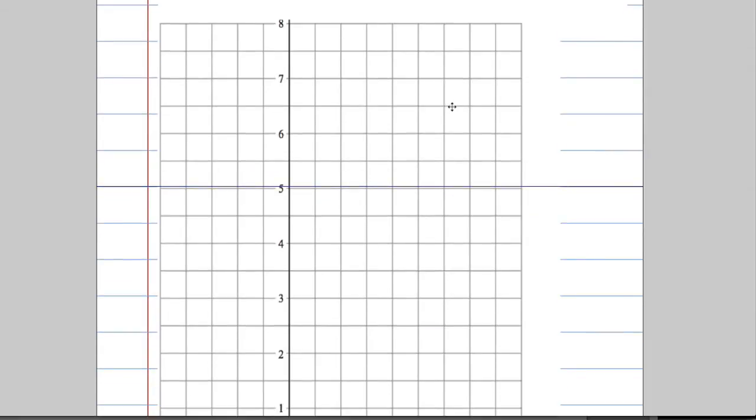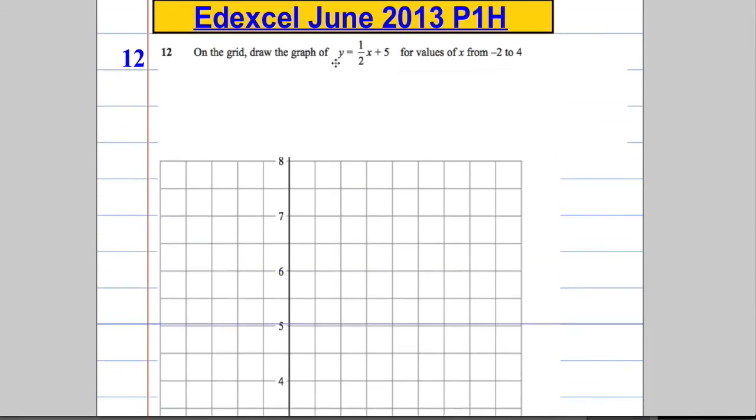We've got this grid here, and we need to do something with this. You might notice there's a bit of a gap here between the question and the graph. There's a reason. They want you to draw a table, or at least they're giving you the space to do so.